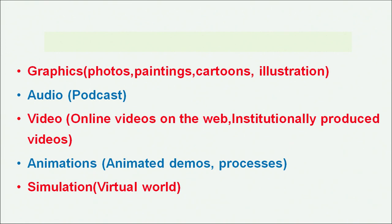The last category of learning resources is digital learning resources. These are often made of different digital media including text, videos, images, and sound. Examples include online articles, websites, e-books, manuals, reports, graphics, photos, paintings, cartoons, illustrations, audio podcasts, online videos on the web, institutionally produced videos, animations, animated demos, processes, simulations, and virtual worlds.